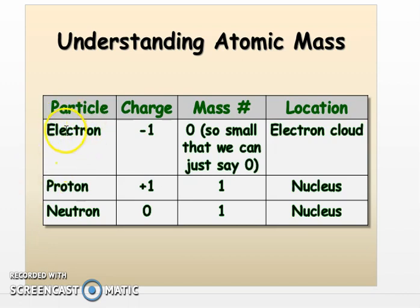So we have our electron, proton, and neutrons. We know electrons have a negative charge, negative one. Protons have a positive one charge. Neutrons have no charge.